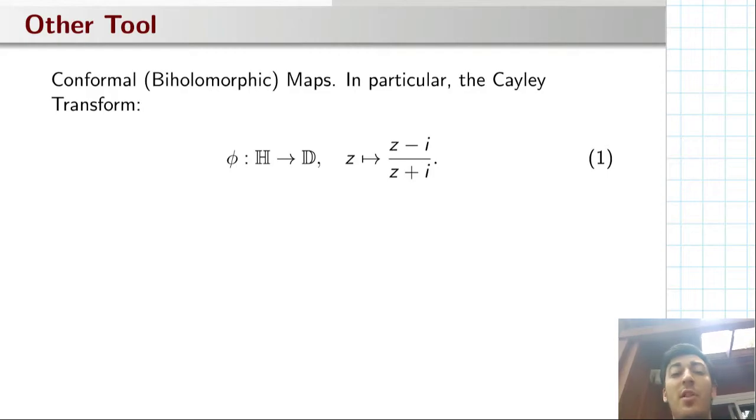These are maps that are bijective holomorphic with a holomorphic inverse. And in particular, there's a very famous one called the Cayley transform, which I've written down the formula for here. This capital H I'll use to denote the upper half plane, and this D again denotes the disk. Hopefully you're familiar with this because it's introduced pretty early on in complex analysis.